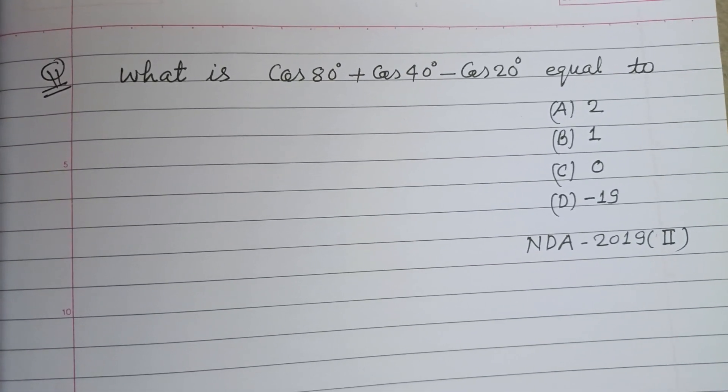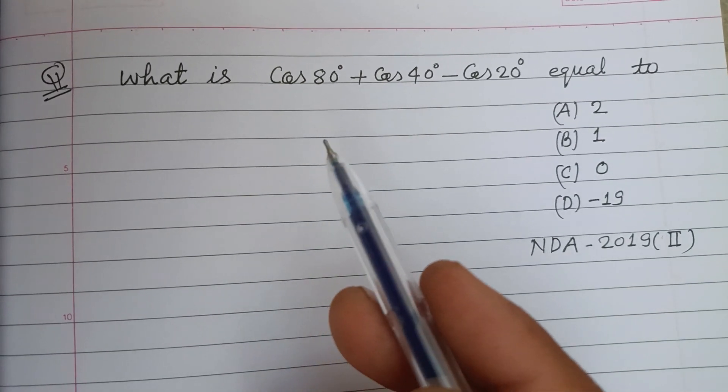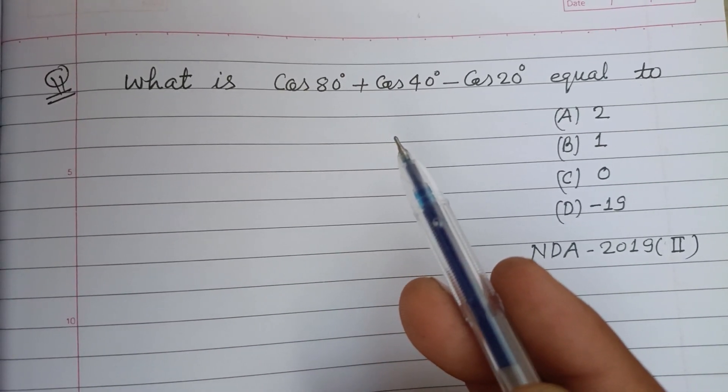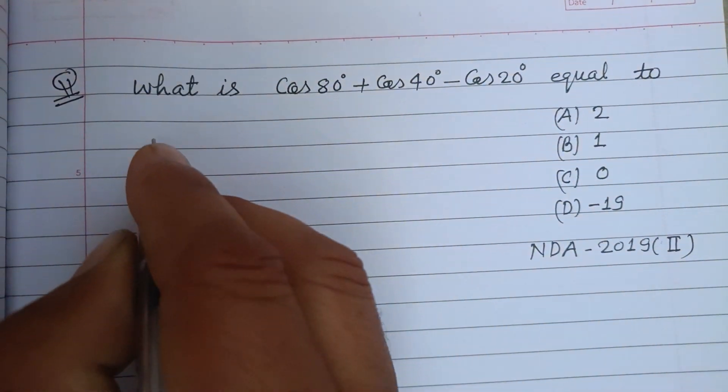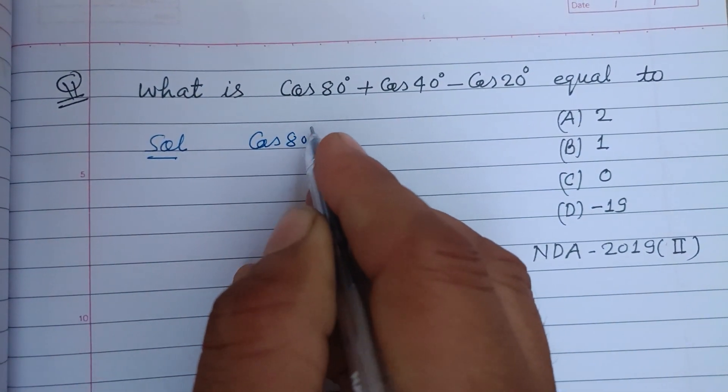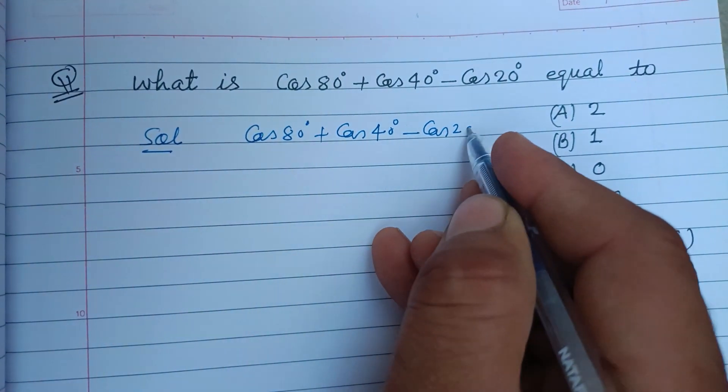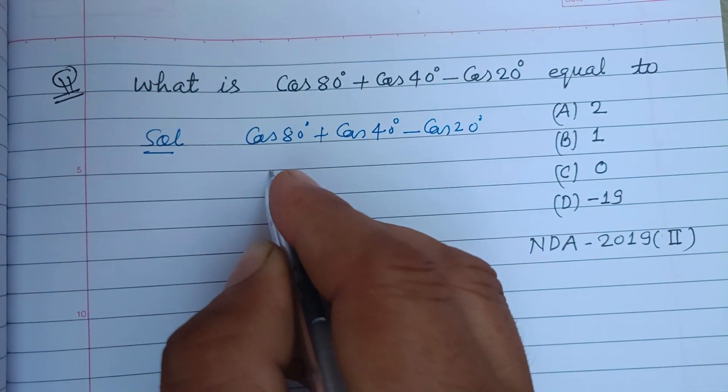Hello viewers, welcome to this YouTube channel. Question from NDA 2019 second: What is cos 80° + cos 40° - cos 20° equal to? So students, here cos 80° + cos 40° - cos 20° is given.